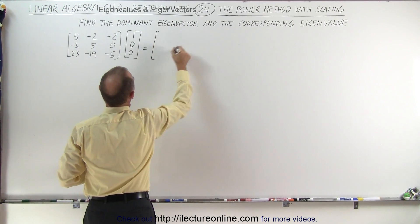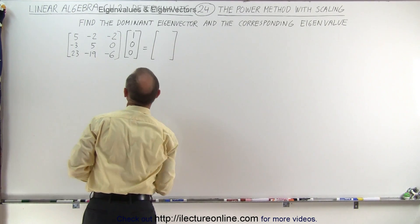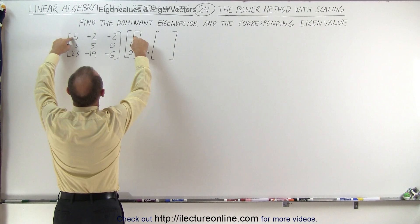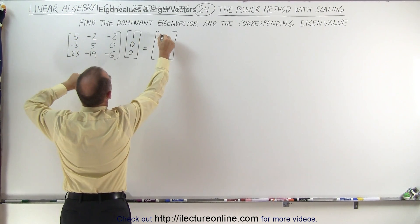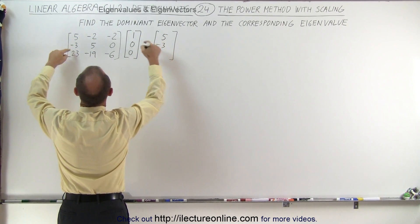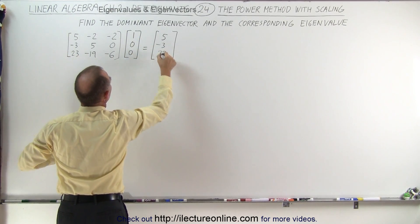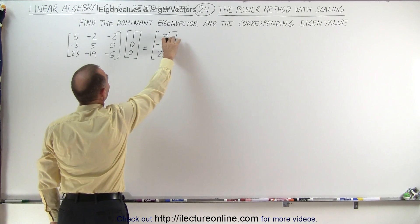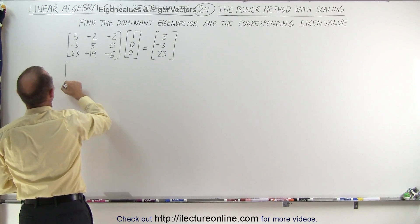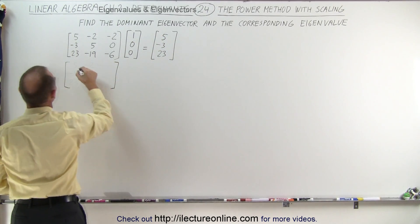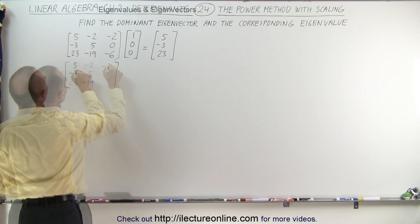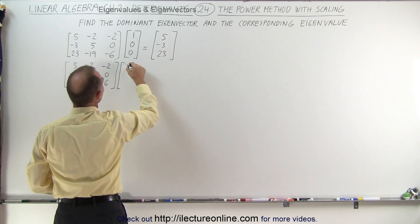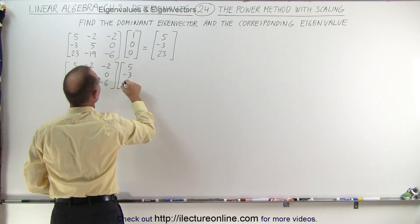When we multiply we get the following and yes we are going to need some calculators pretty soon but this begins easy. 5 minus 3 and 23. That was easy so that's going to be our next eigenvector attempt. We rewrite the same matrix minus 19, 5 minus 2, 0 and minus 6. So our next attempt is going to be 5 minus 3 and 23.